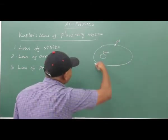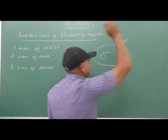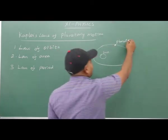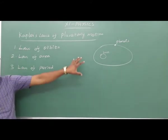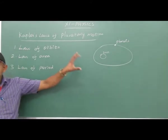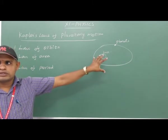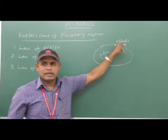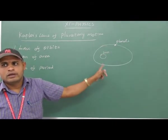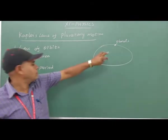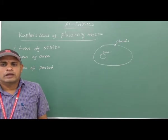In the elliptical orbit, each planet moves around the sun in an elliptical orbit with the sun at one of the foci. The sun is at one focus, not at the center of the ellipse.